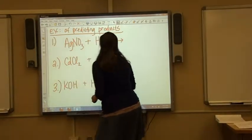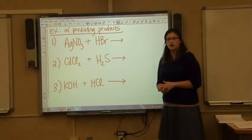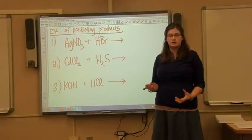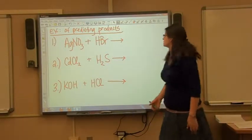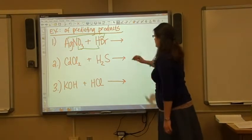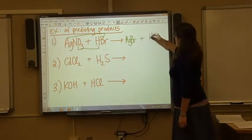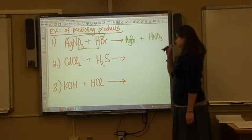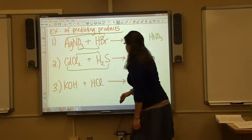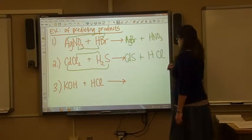Let's do some practice — predicting products for now. When I ask you to predict the products of a reaction, I'll give you two reactants and you'll combine them into the products formed. Taking outside and inside: we'll have silver bromide and HNO3 (nitric acid). For the next problem, outside and inside gives us cadmium sulfide and HCl (hydrochloric acid).